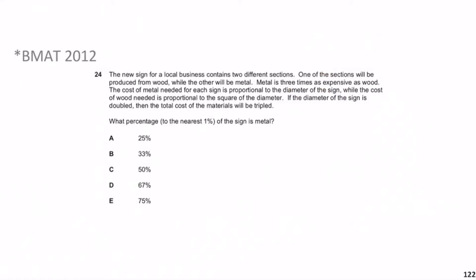The total cost C equals the cost of wood plus the cost of metal. The cost of wood is proportional to the square of the diameter, so cost of wood equals k₁d². The cost of metal is proportional to the diameter, so cost of metal equals kd. Note the constants of proportionality are different — I'll call them k₁ and k. So C equals k₁d² plus kd.